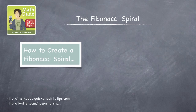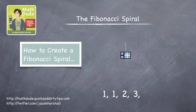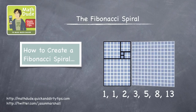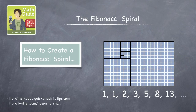We're going to draw a bunch of squares: a 1x1 square, another one, 2x2, 3x3, 5x5, 8x8, and 13x13 — and you can keep on going. The length of the side of each square is a Fibonacci number.